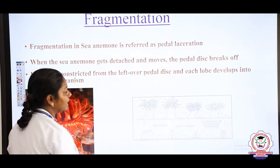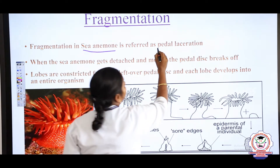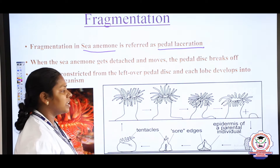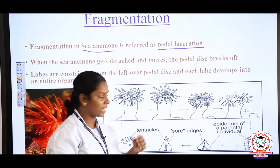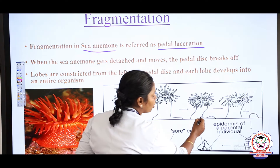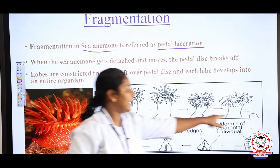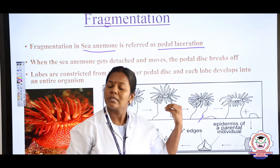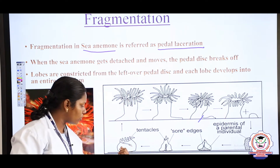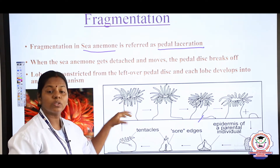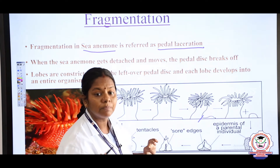In sea anemone, it undergoes a special process called pedal laceration. When the sea anemone starts to move and detach, it undergoes depression at the lower portion. Small mound-like structures form, and small parts cut off from the sea anemone. These parts then develop, producing tentacles and a mouth, finally becoming individual sea anemones. This process is called pedal laceration.